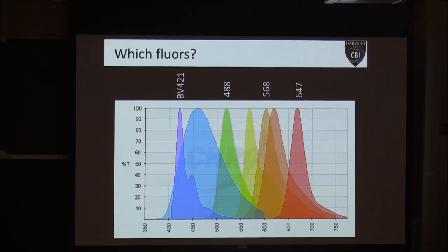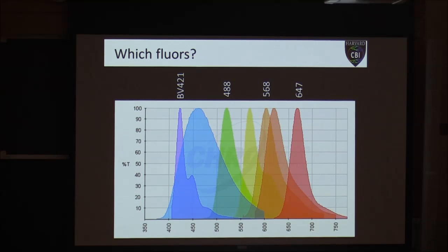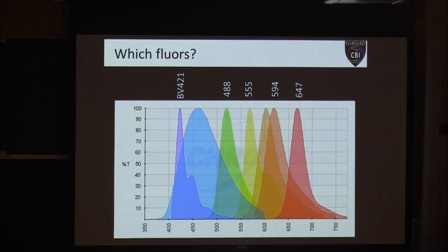If you don't need a nuclear stain and still want four-color imaging in the blue region, Brilliant Violet 421 or Alexa 405 are good options. Just know the blue dyes are never very bright, so make sure the blue dye goes on your most abundant protein — neither BV421 nor Alexa 405 is very bright. For five-color imaging, I recommend: 405 or 421 for blue, keep 488, switch to a more yellow dye 555 and a more red dye 594, and keep 647.